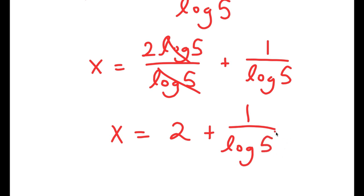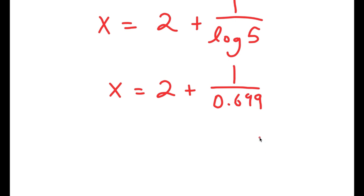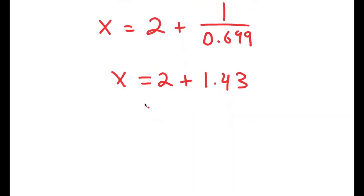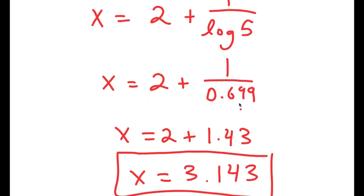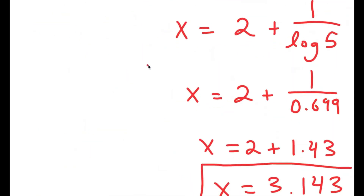Although this is an elegant answer, I want the exact decimal value, so log 5 is equal to 0.699. That means 1 divided by log 5 is going to equal 1.43. So 2 plus 1.43 is 3.43, giving x is equal to 3.43. This is my answer to this problem, and remember we already said x was going to be somewhere between 3 and 4 — so this proves us right.